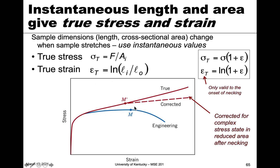True stress and true strain give us a different view of the material. True stress compensates for changes in area during plastic deformation and necking. True stress is defined as force over the instantaneous area. However, measuring true stress requires always knowing the instantaneous area, which is difficult — it's the equivalent of constantly using calipers on the sample during the test. That's not always practical, which is why we tend to use engineering stress and strain.